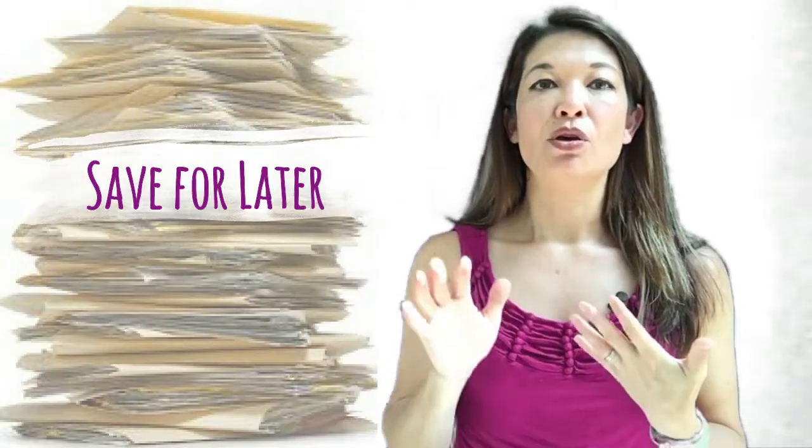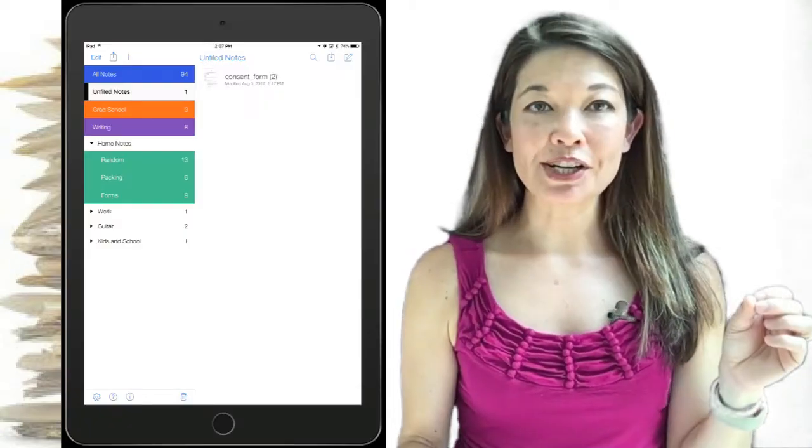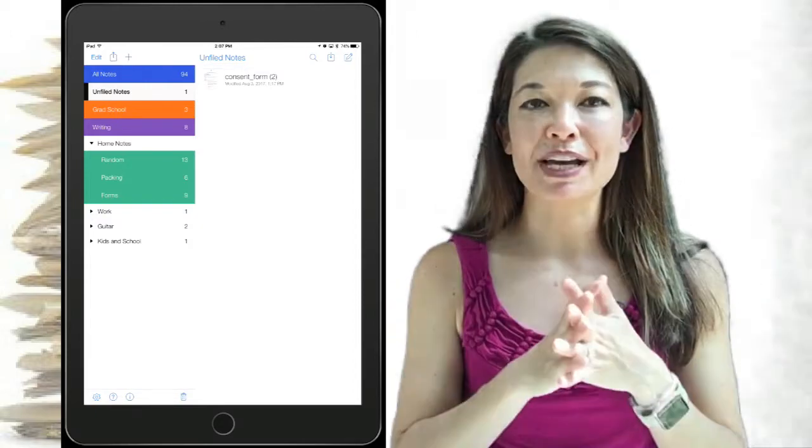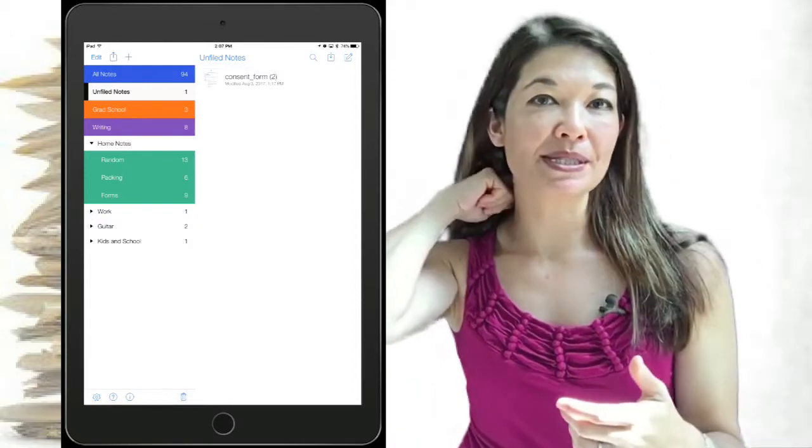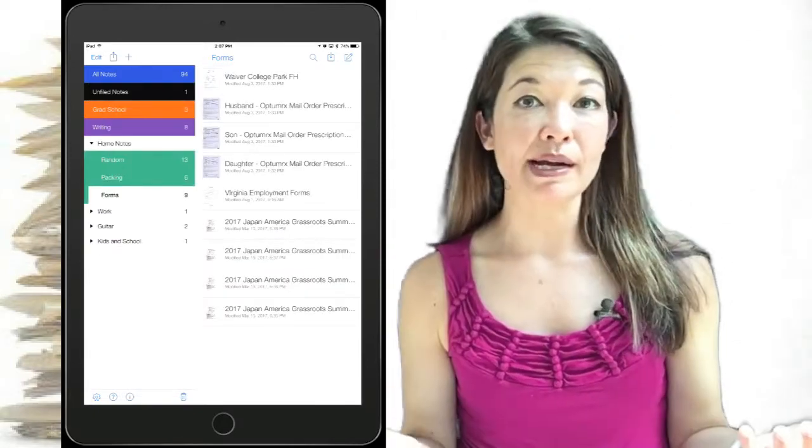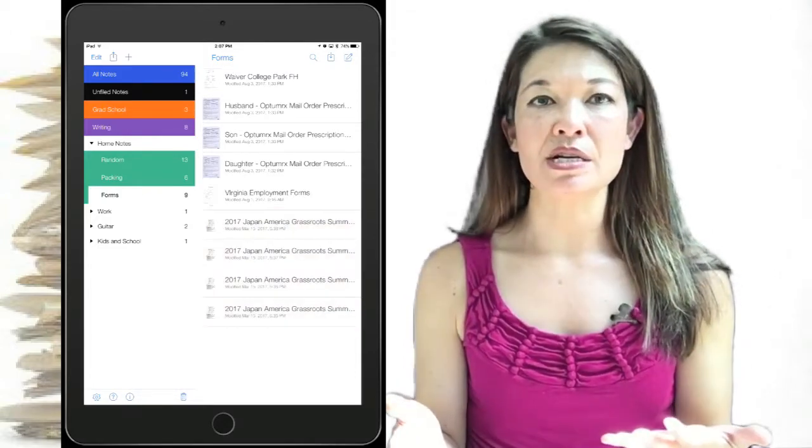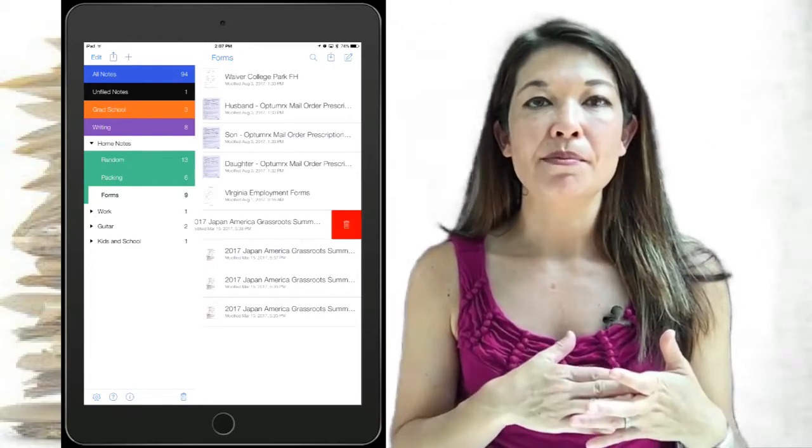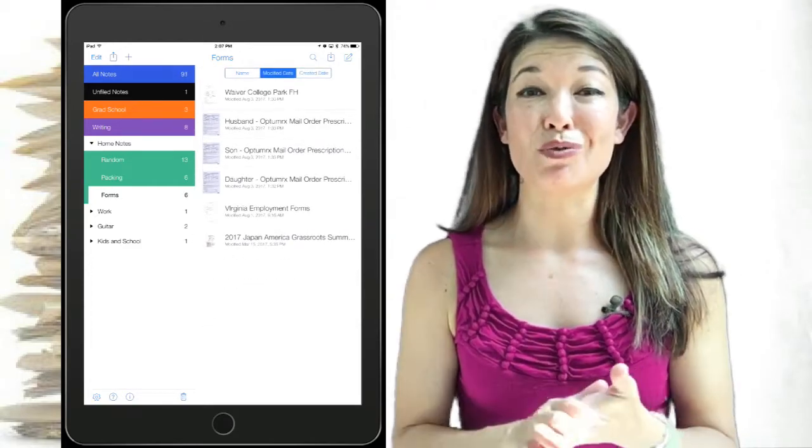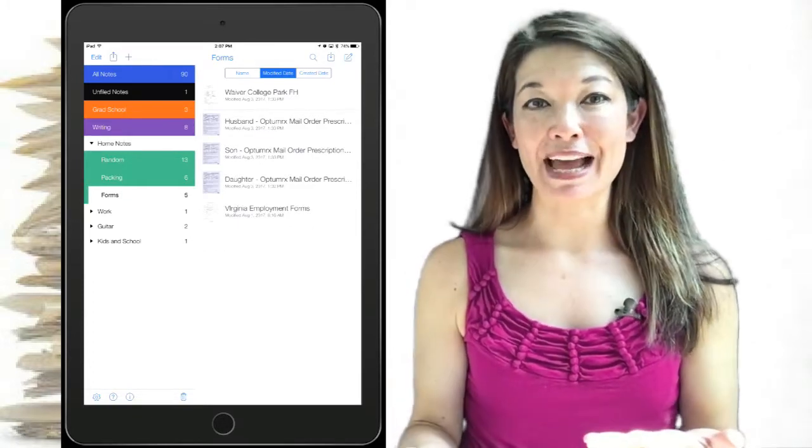Save for later. Notability has organized notes by first divider and then by subject, kind of like a giant school notebook. I have a divider called Home Notes, and I keep a subject called Forms to house all of the forms that I fill out. Some of the forms are temporary, like these forms that I filled out for our Japan trip earlier this year. So now that the trip is over, I can delete them, but I wanted to keep them for a little while just in case I needed to make changes and resubmit. It would be super annoying to have to do all of that work again if I didn't have to.